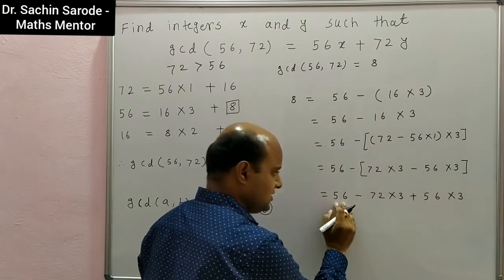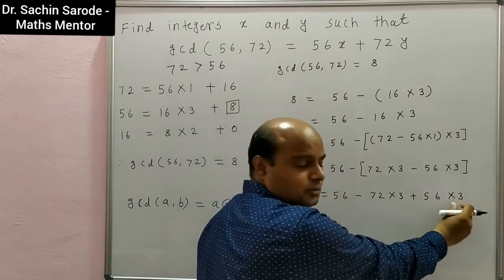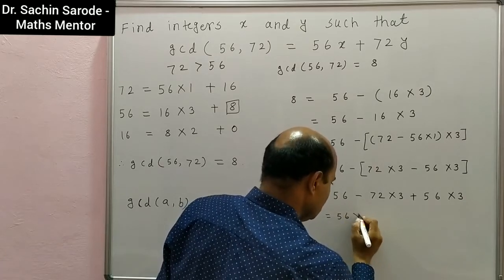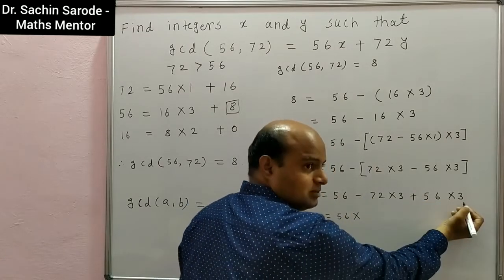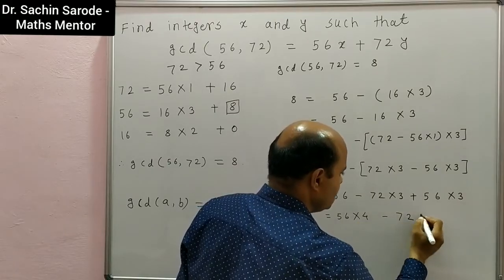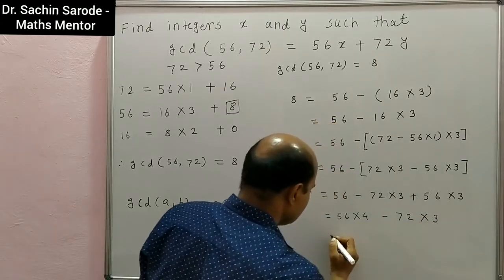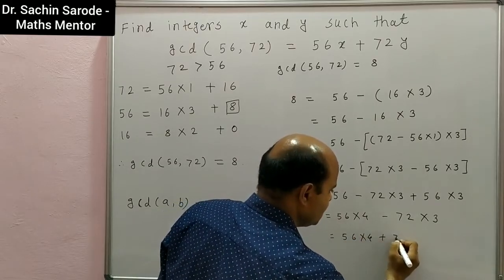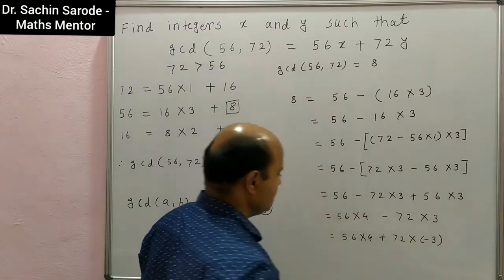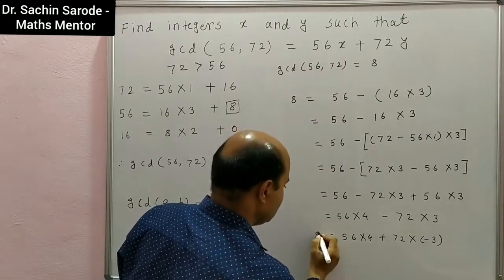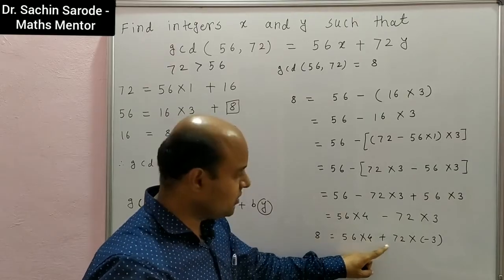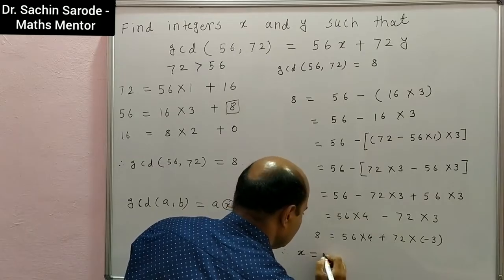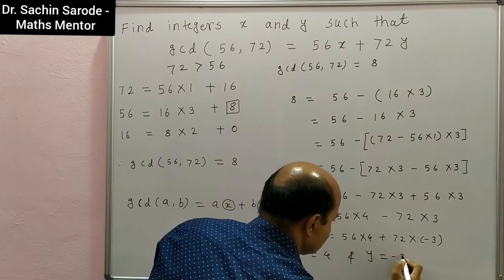Combining the 56 terms: 1 + 3 = 4. So we get 8 = 56 × 4 + 72 × (−3). Therefore, 8 is written as 56 × 4 + 72 × (−3). Hence, x = 4 and y = −3.